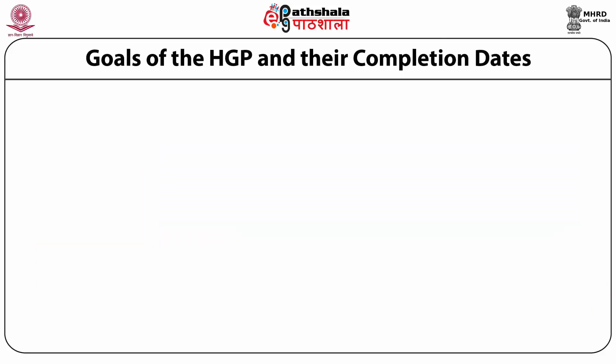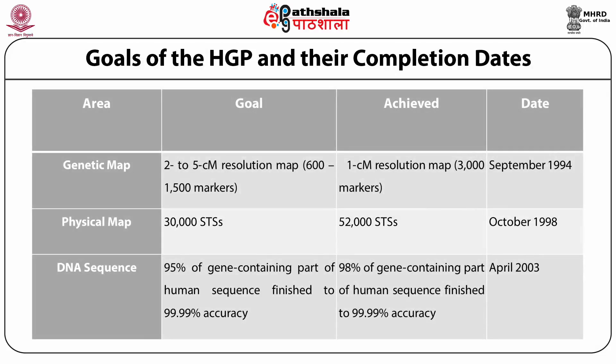Regarding the goals of the HGP and their respective completion dates: the first was the generation of a genetic map. The HGP had planned to generate a genetic map with a resolution of 2 to 5 centimorgan, but by September 1994 they had already made a genetic map with a resolution of 1 centimorgan. The second goal was to generate a physical map with 30,000 sequence tagged sites, but they were able to generate a physical map with 52,000 sequence tagged sites by October 1998.